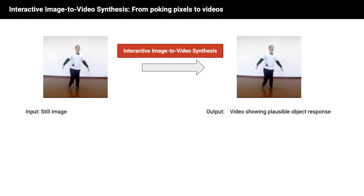Therefore we introduce the problem of interactive image to video synthesis, where we consider being given a still input frame of a certain object, in this case the depicted person, and the poking of a single pixel within this object, which defines the desired end position of the poked object part.